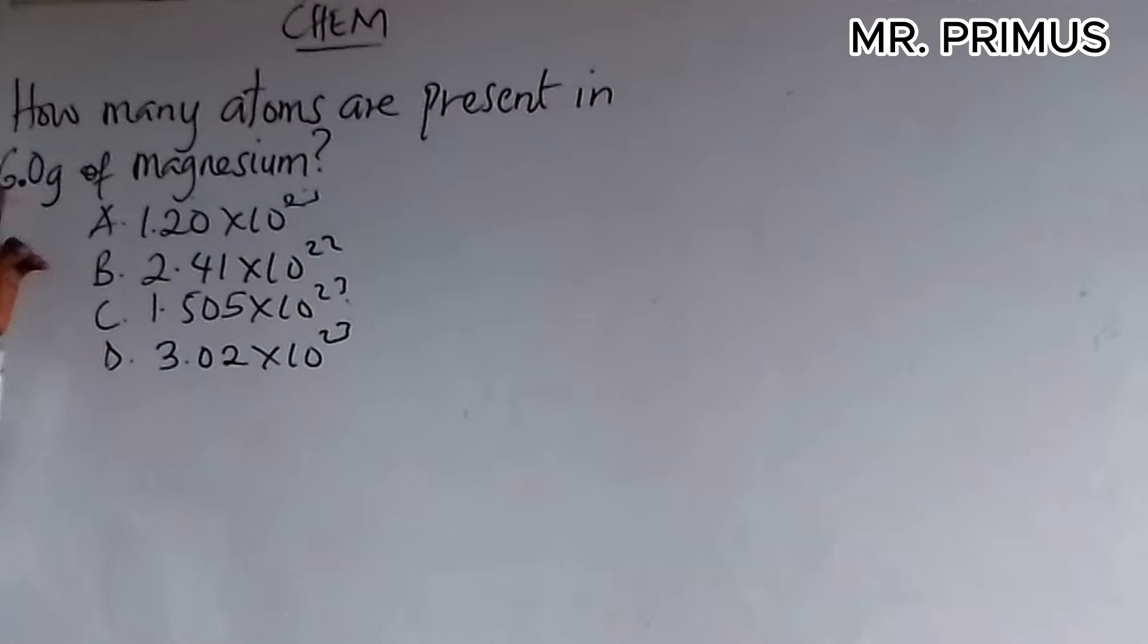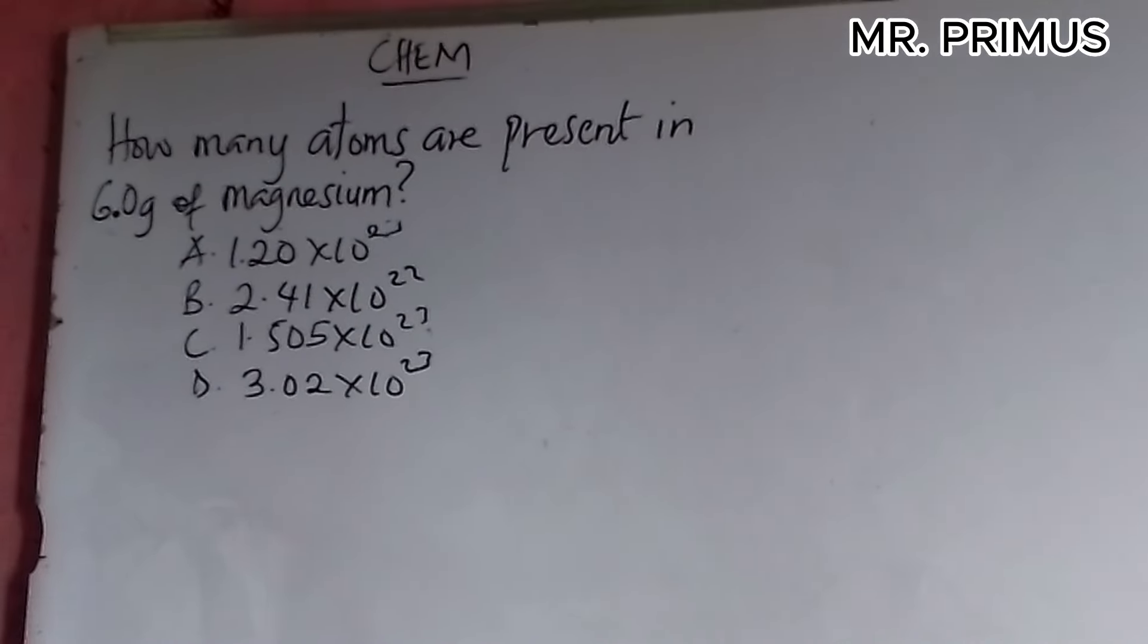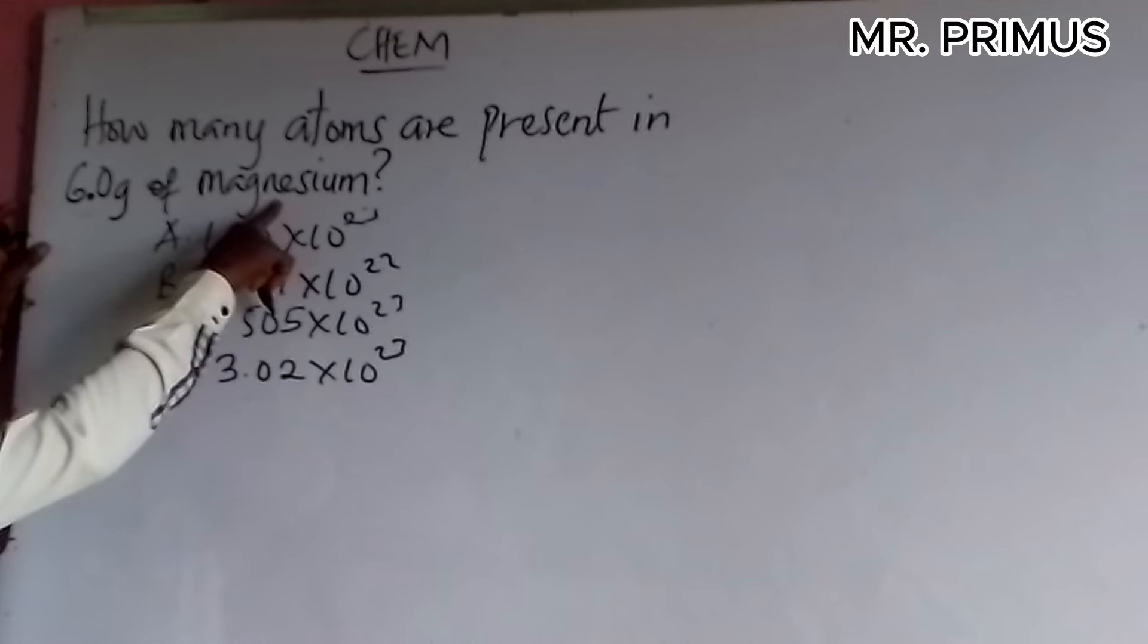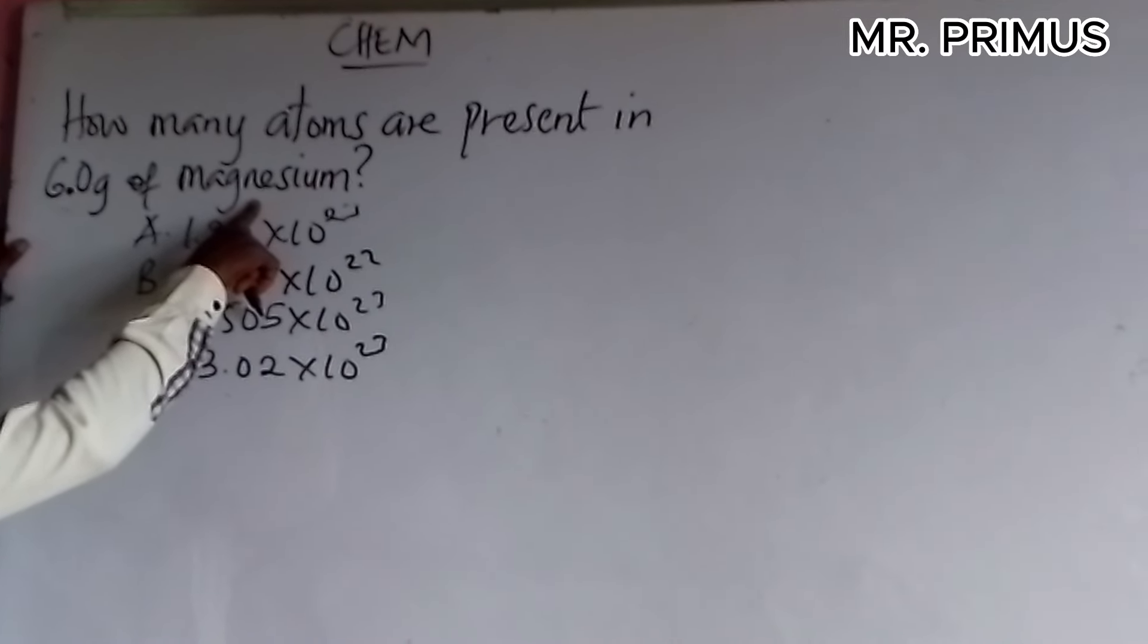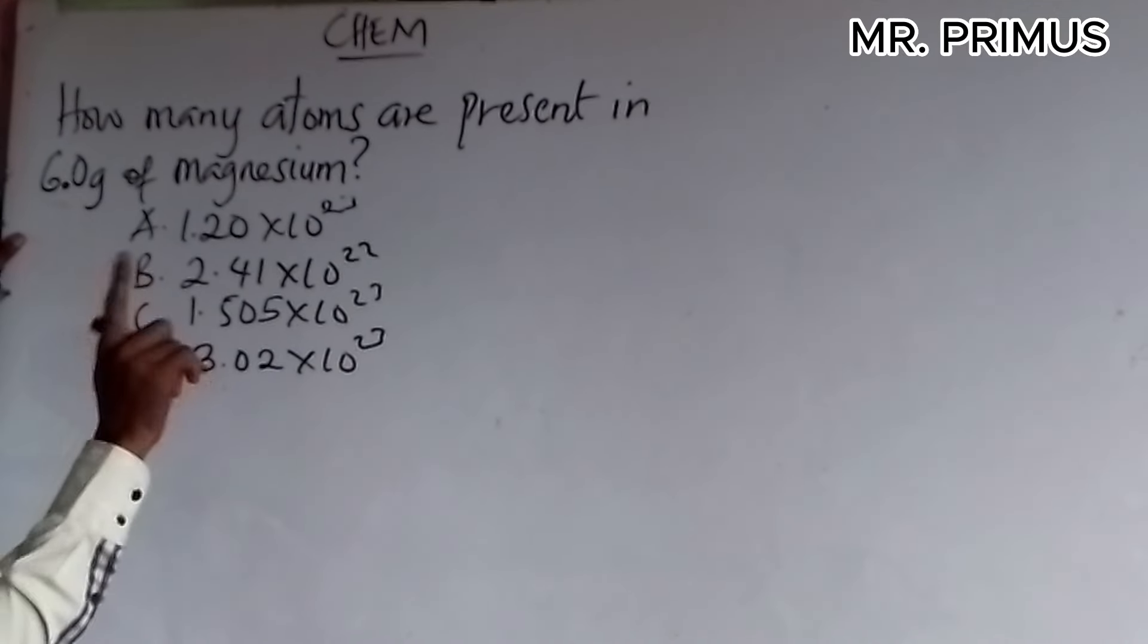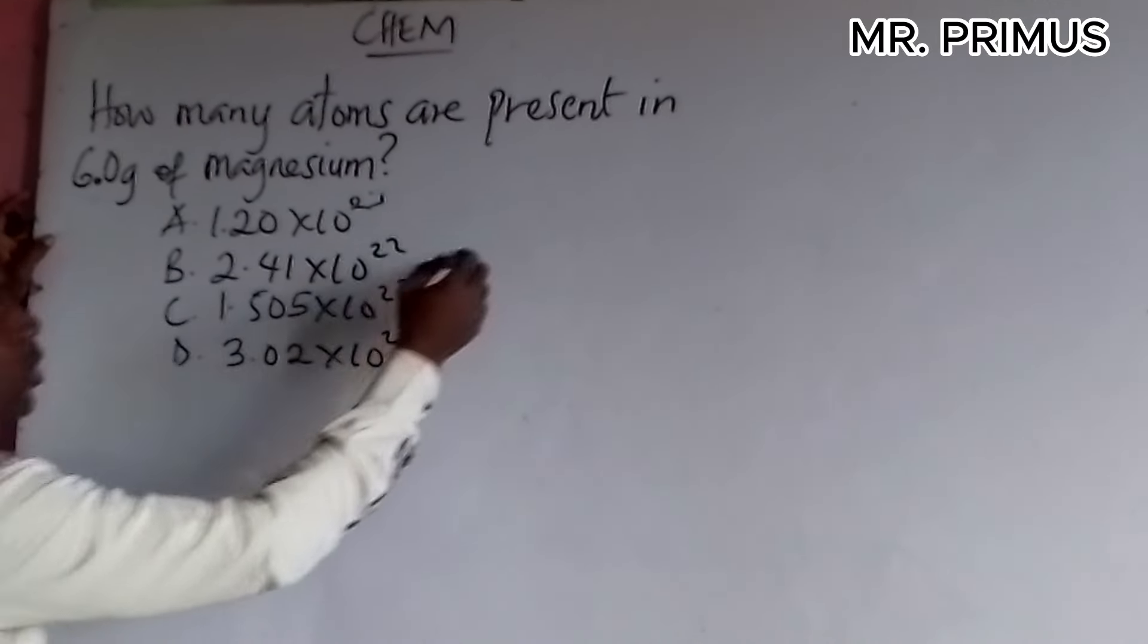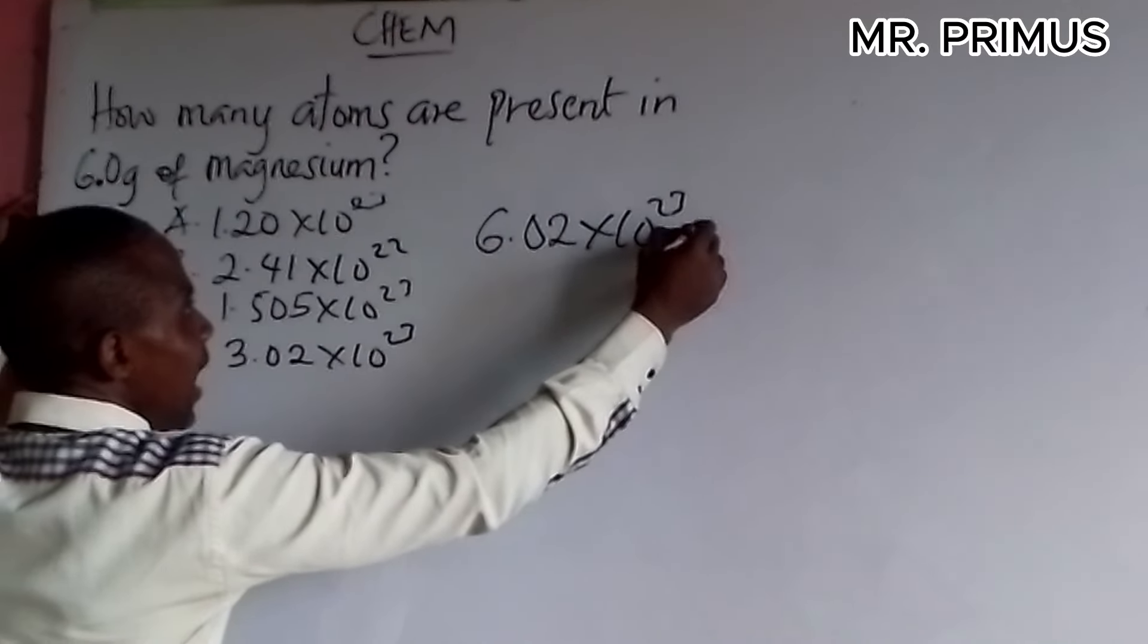Now, how many atoms are present in 6.0 grams of magnesium? Look at these options. Of all these options, we are going to find out the one that is correct. Now, magnesium has atomic mass 24. We are going to use it with this. And for every relative atomic mass, according to Avogadro's number, this number is constant: 6.02 times 10 raised to power 23 atoms.